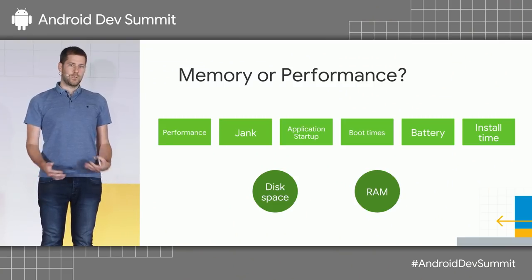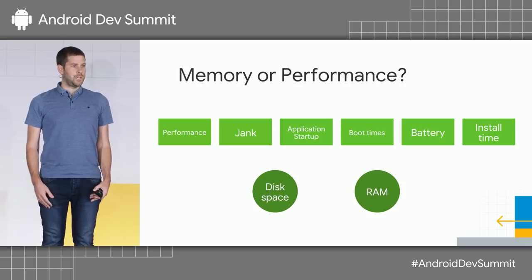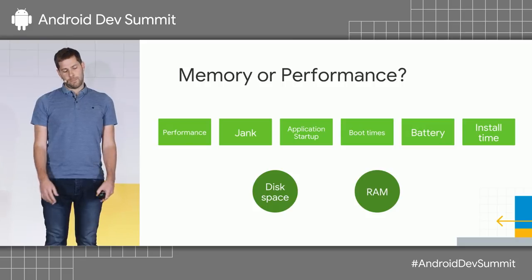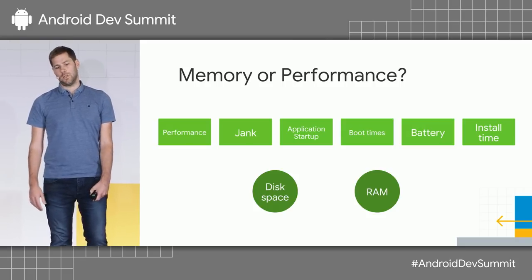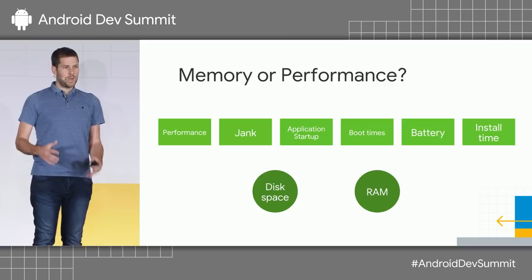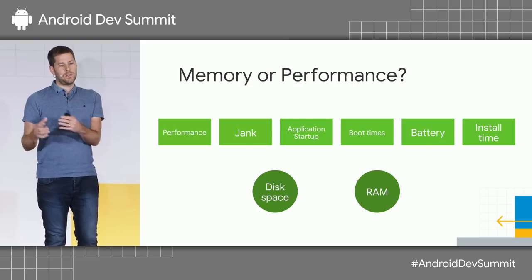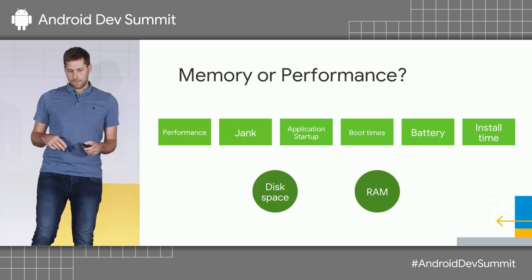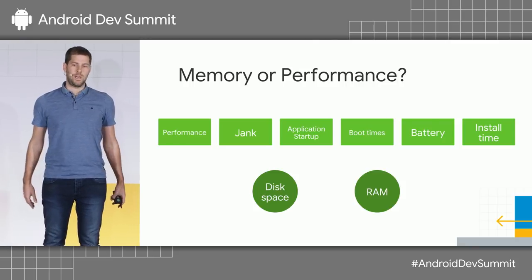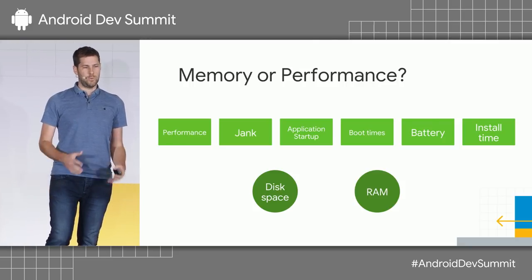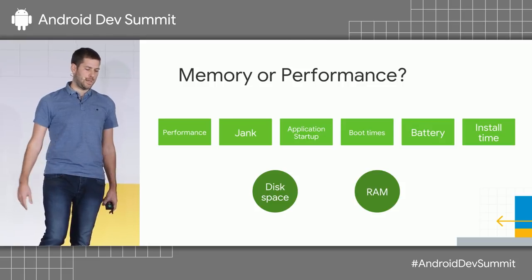Application startup — there's a lot of Java code that needs to be executed during application startup. If the runtime is slow, startup will be slow. Boot times — the Android OS is written in Java, so a lot of code executes during boot. Battery — if we're slow, we're going to tank your battery. And install time is also something we care about, because when we get an APK, the platform will optimize it, and that could take a long time. We don't want that long time to happen because we want you to use the app right away.